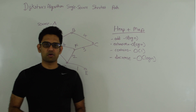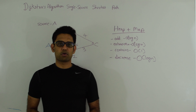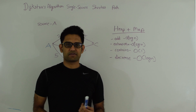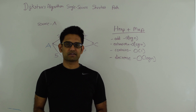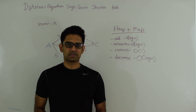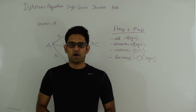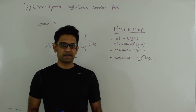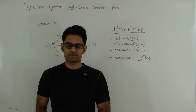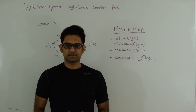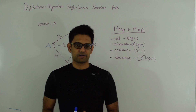Dijkstra's algorithm works both on directed and undirected graphs as long as the weight on the edge is non-negative. Also, Dijkstra's algorithm is a greedy algorithm and it's very similar to Prim's algorithm for finding a minimum spanning tree, which I have already discussed in another video.